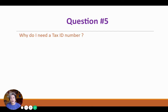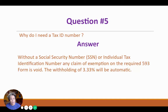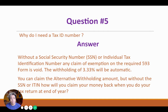Question number five: Why do I need a tax ID number? Well, without a social security number or a tax ID number, any claim on the required 593 form is void. The withholding of 3.33% will be automatic. However, without the tax ID number, you can still do the alternative withholding claim. But if you think about this — if you don't have a tax ID number and we send the alternative withholding to the state for you, how are they going to locate it and know where to put it against? So of course, it is best for you to get the tax ID number and submit it at closing.